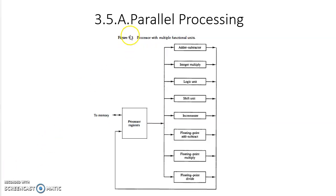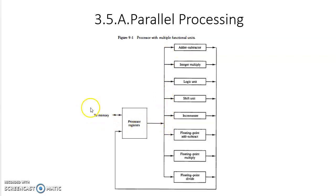Here you can see a processor with multiple functional units. It has a separate adder/subtractor, integer multiply, logic unit, shift unit, incrementer, and floating point operations. Processor registers are present, and you need a control unit to coordinate these operations. Each unit needs separate operands — they need different data. They cannot act on the same data at a time. Data will be stored in memory and one data item can be used by one functional unit. For all units to work simultaneously, you need separate modules in memory.